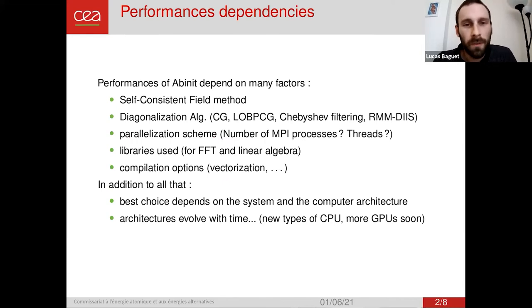So Abinit performances depends on many, many factors, as any other code actually. So first, it depends on the self-consistent field method you use in order to compute the new density or the new potential. Then it depends on the diagonalization algorithm you use to compute the wave function from the Hamiltonian. Then it also depends on the parallelization scheme, how many MPI processes do I use, how many threads, how do I distribute the data, etc.